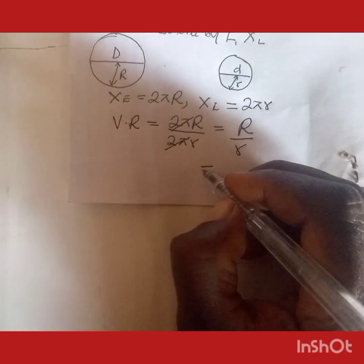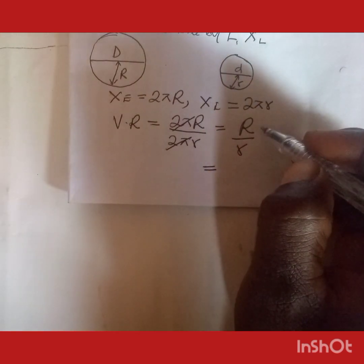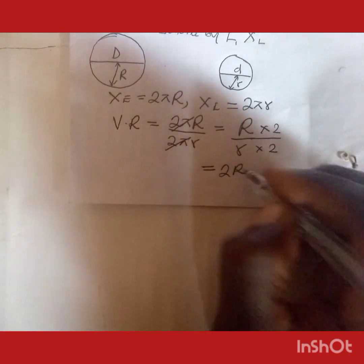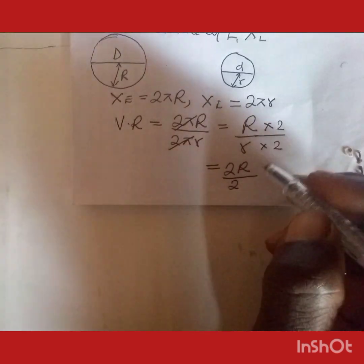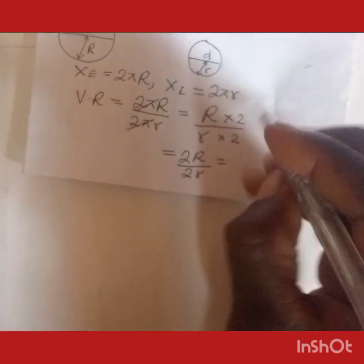Or simply, if we multiply top and bottom by 2: 2 times capital R over 2 times lowercase r, which gives us capital D over lowercase d, since 2R equals D and 2r equals d.